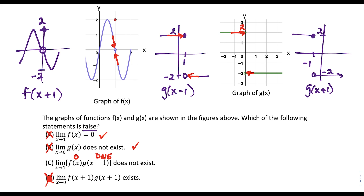Choice C has to be explored a little bit more. We could quickly rule out that choice D is in fact true. If we take the limit as x approaches zero of f of x plus one, as we approach zero from the left and right side, notice that our limit is equal to zero. And then if we look at the limit as x approaches zero of g of x plus one, as we get closer to zero from the left and right side, notice that we're heading down to a height of negative two. This is not the funny part of the graph where there's a jump. So we would just have zero times negative two is equal to zero, which tells us our answer has to be choice C.